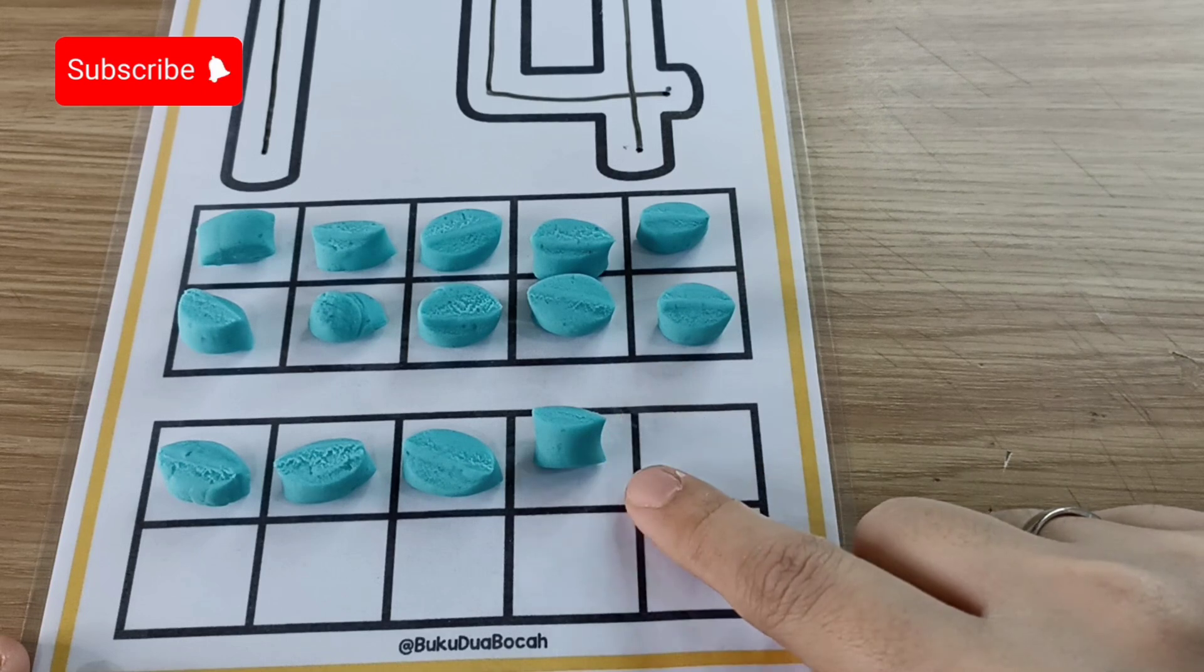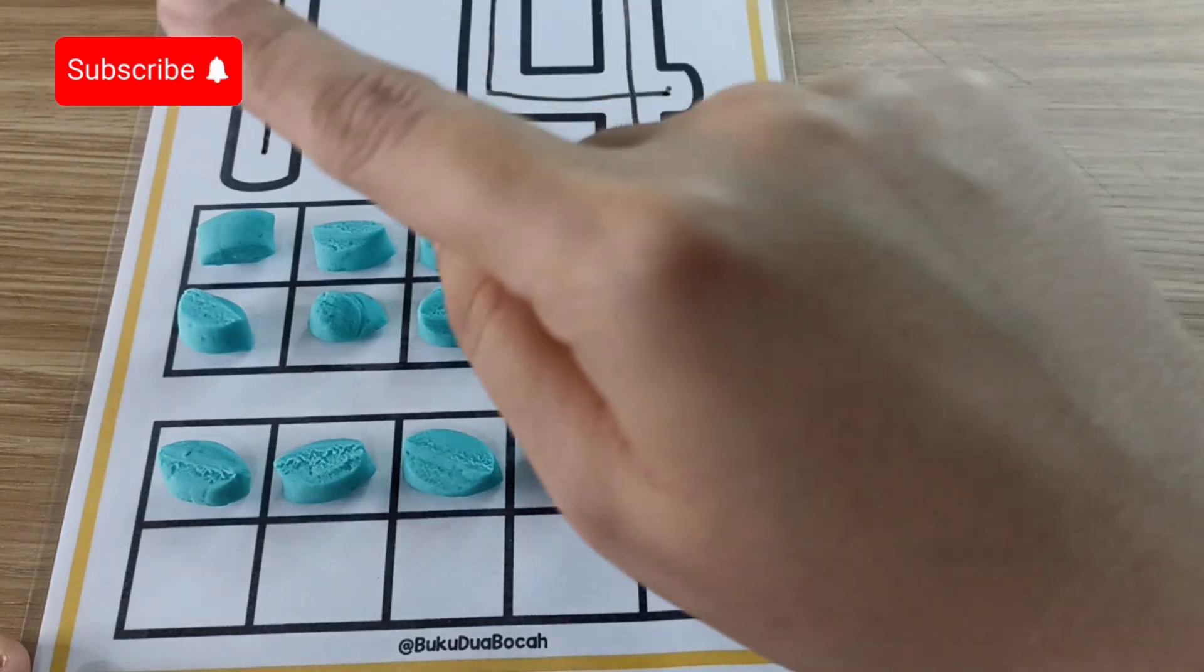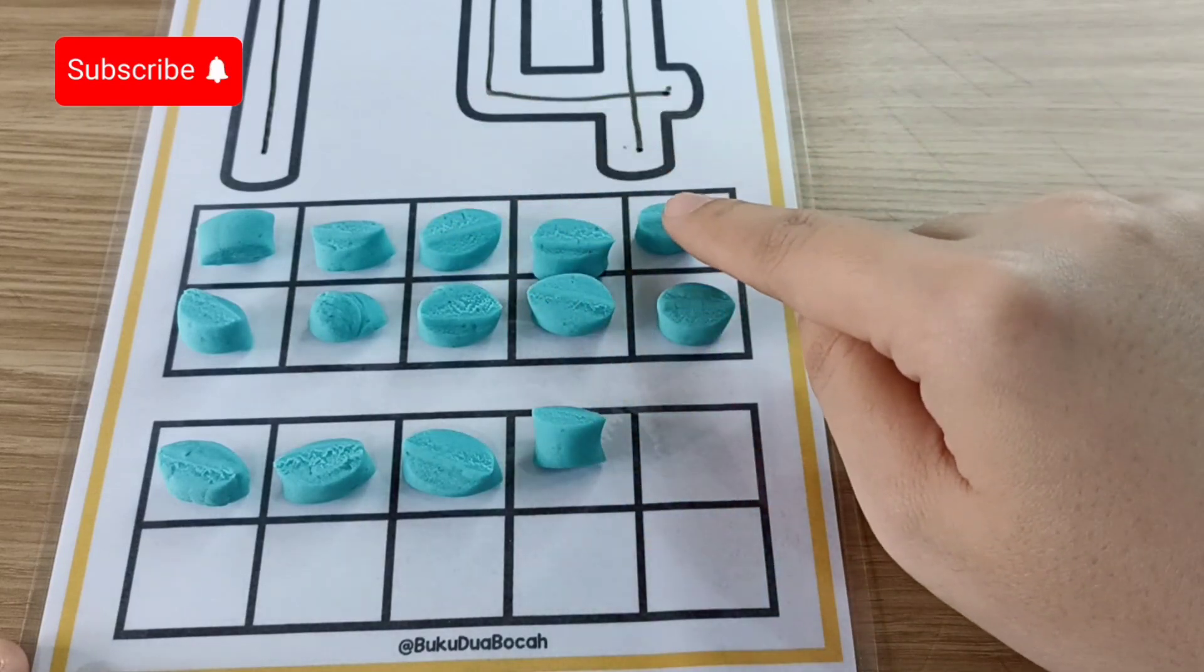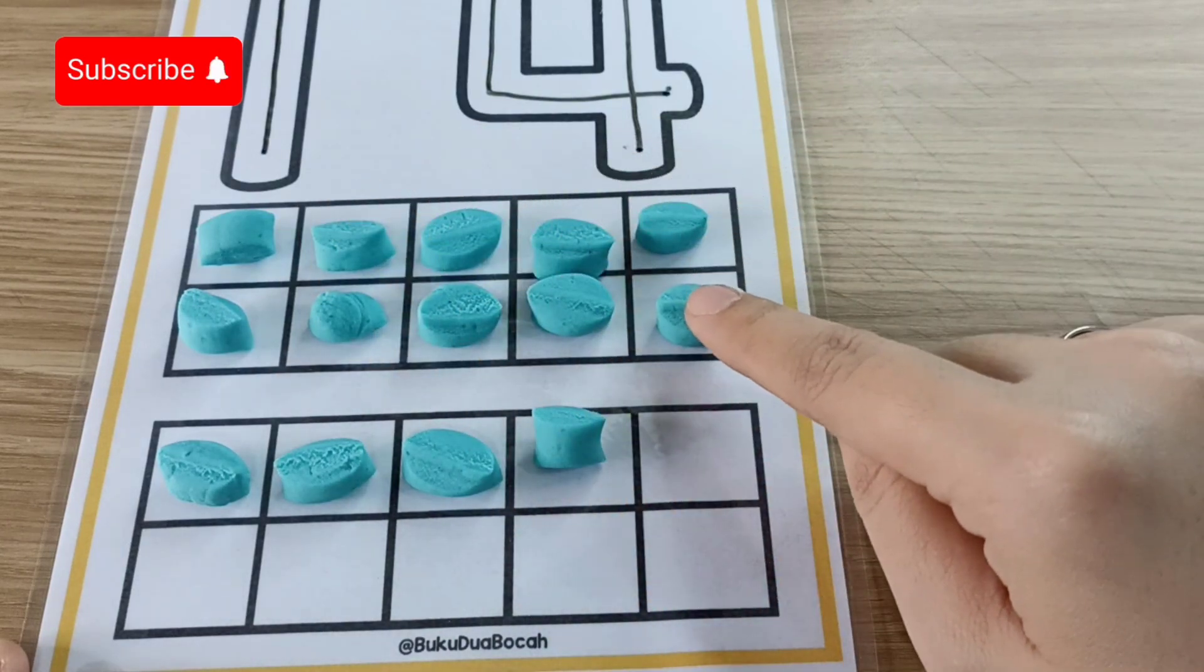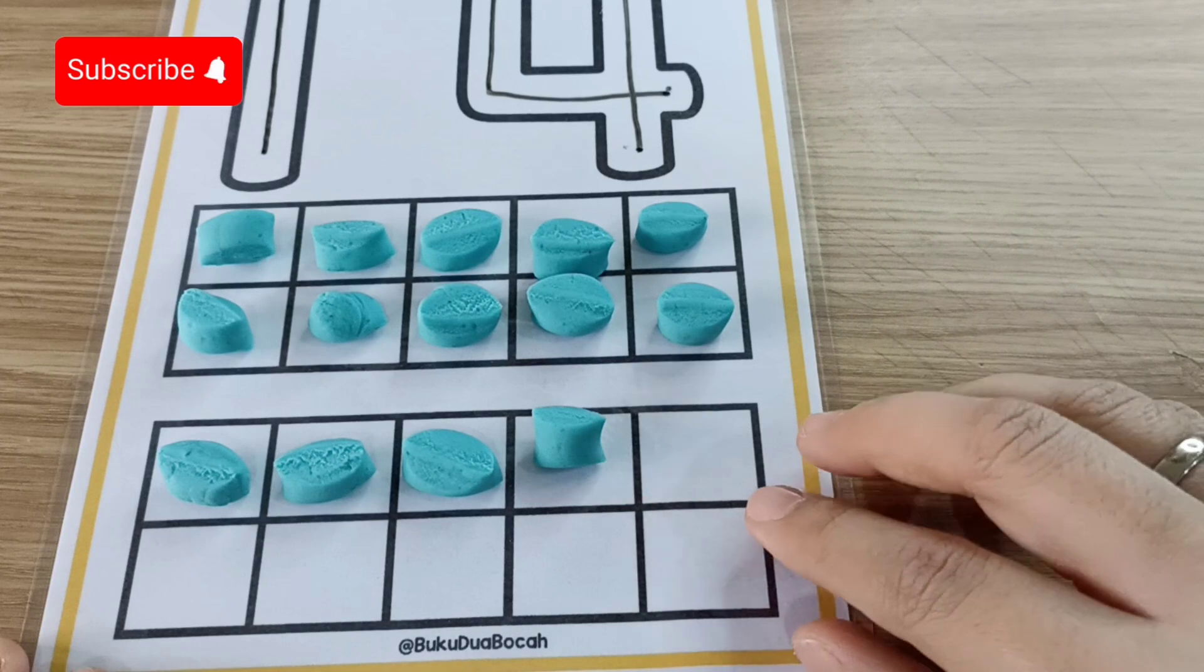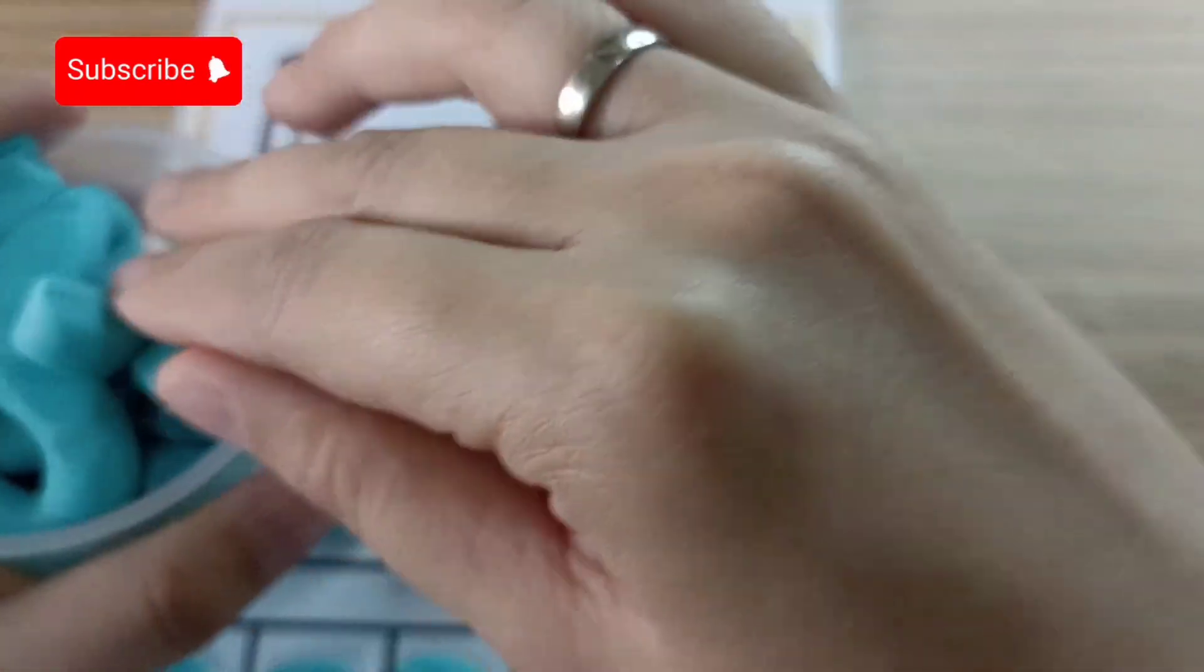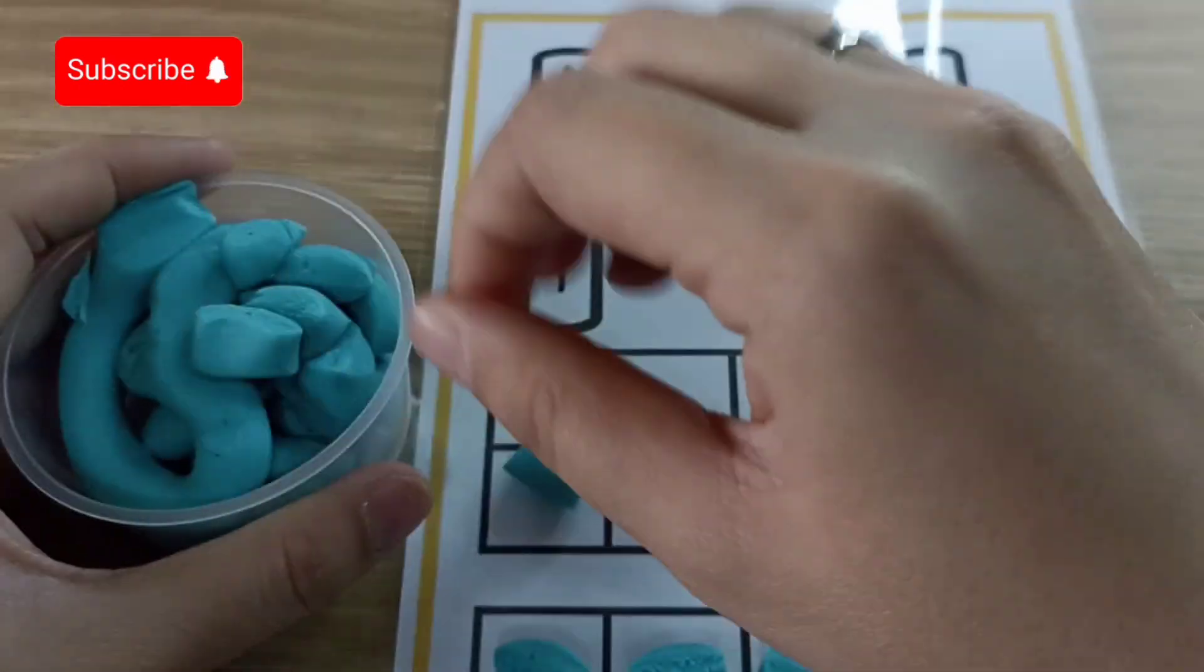Play-doh. Now it's your turn children. And if you are done, let's count again from the top. Look at Miss Andy first. Touch and count. One, two, three, four, five, six, seven, eight, nine, ten, eleven, twelve, thirteen, fourteen. Yes, 14. Now let's take your play-doh children and put it in the box. Tidy up the play-doh. Bye-bye play-doh.